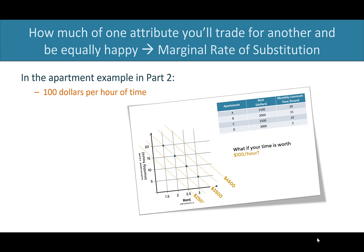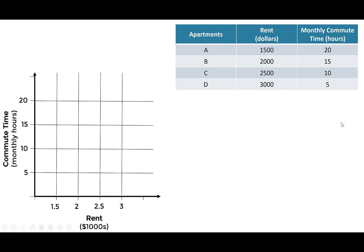Recall from the apartment example in part two that the marginal rate of substitution is just how much of one attribute you'll trade for another and still be equally happy. In our apartment example, we had rent in dollars and monthly commute time. Our four apartments are labeled on our graph, apartment A up at the top left, down to apartment D in the bottom right. And if your time is worth $100 per hour, that is the marginal rate of substitution you're willing to trade between rent dollars and commute time hours.